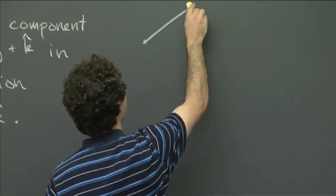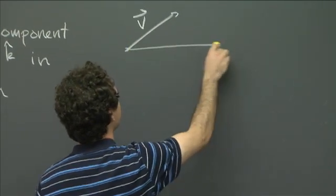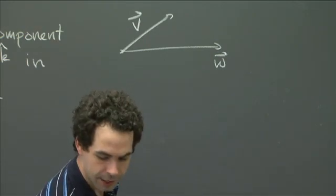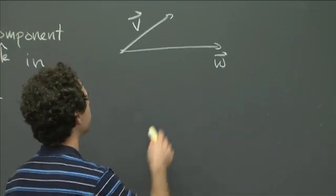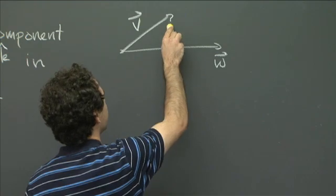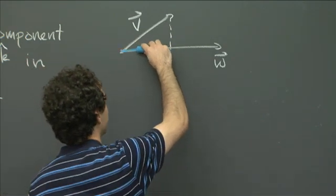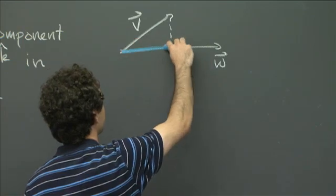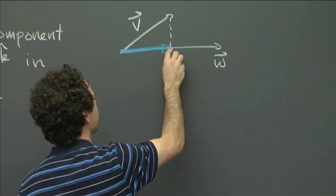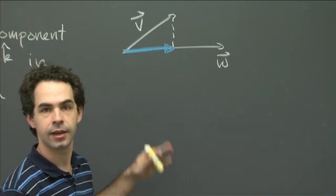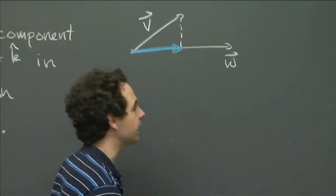So if you have a vector v and you have another vector w, then the projection of v onto w is what you get if you drop a perpendicular line there. And then it's just this vector here. So that's the projection. And then the component is the length of that projection, again, with this sign if necessary.